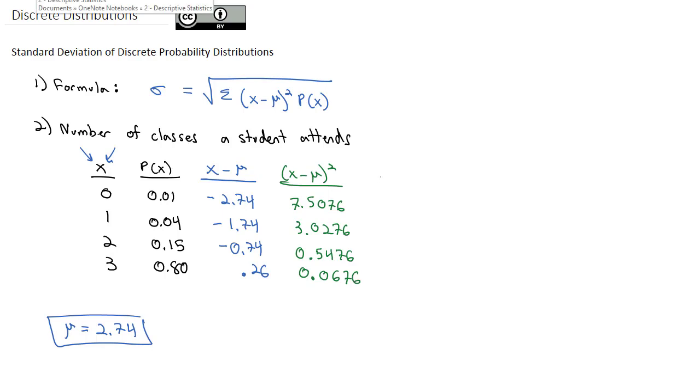The next part of the formula says we're going to take that result, and we're going to multiply it by the individual probabilities.